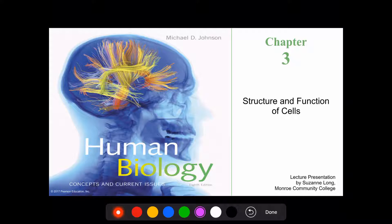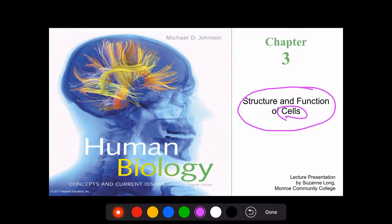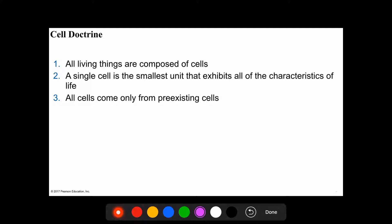We are going to start Chapter 3, which will go through the cells — the basic unit of life in living things. As with the last part of Chapter 2, there are many things I believe are straightforward and I don't need to go through them in detail. I might be skipping some slides, but those slides are still on you and still part of the chapter and your exam.